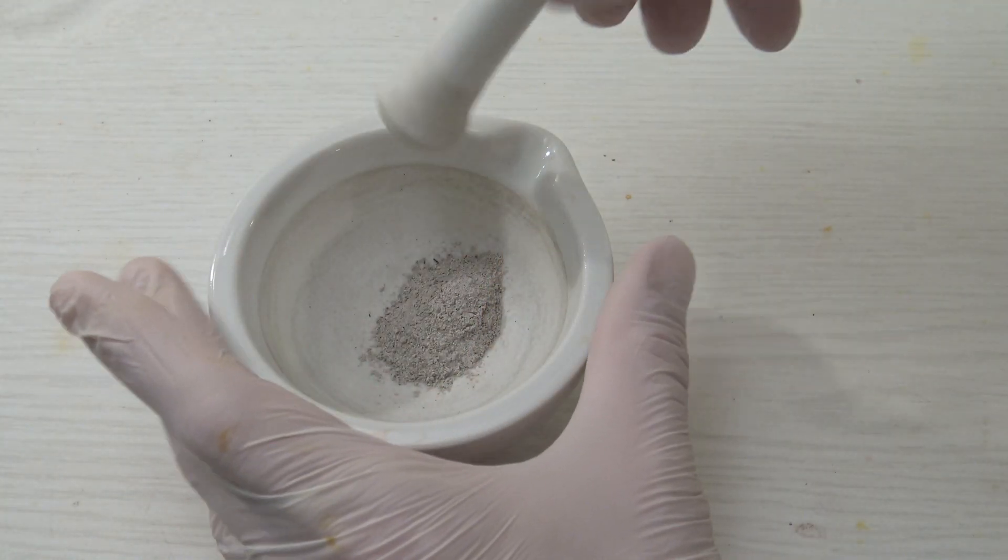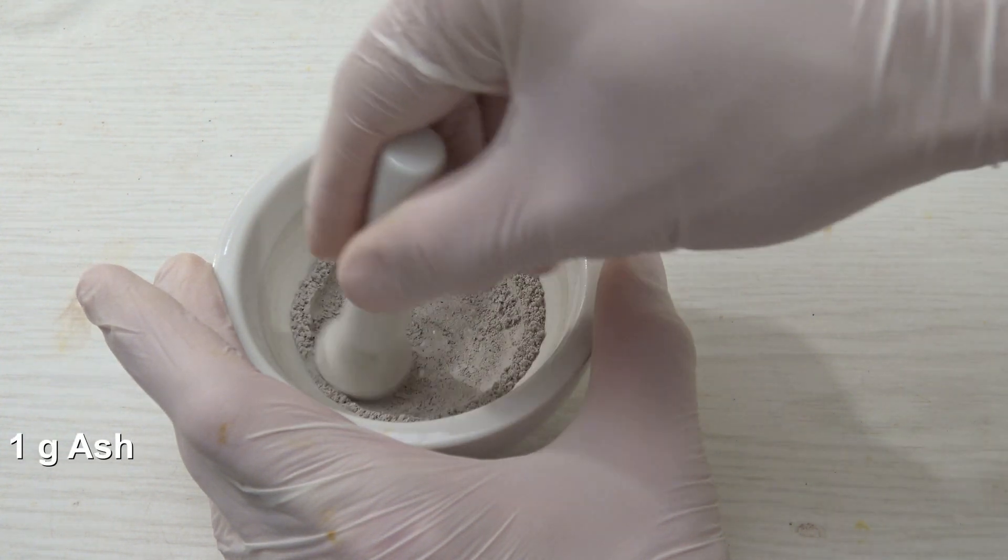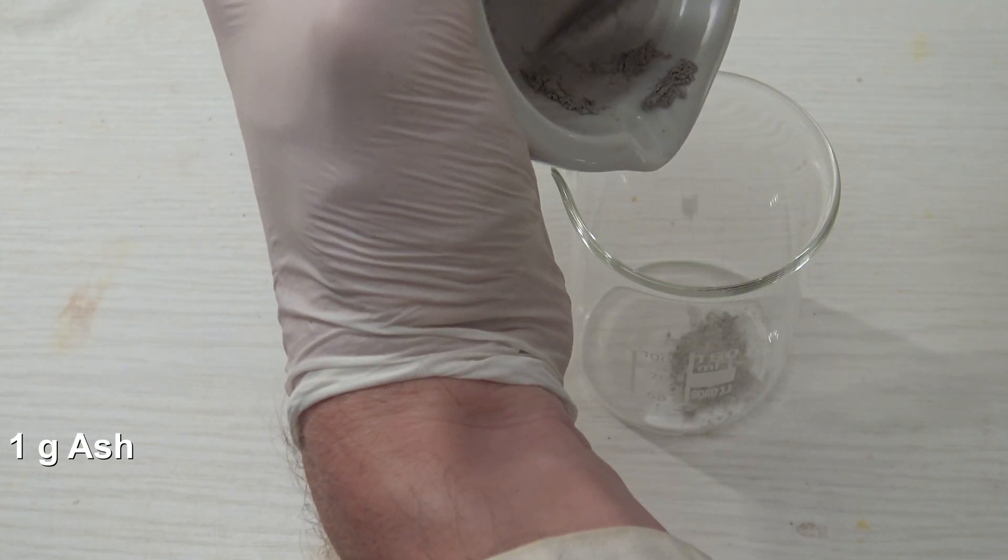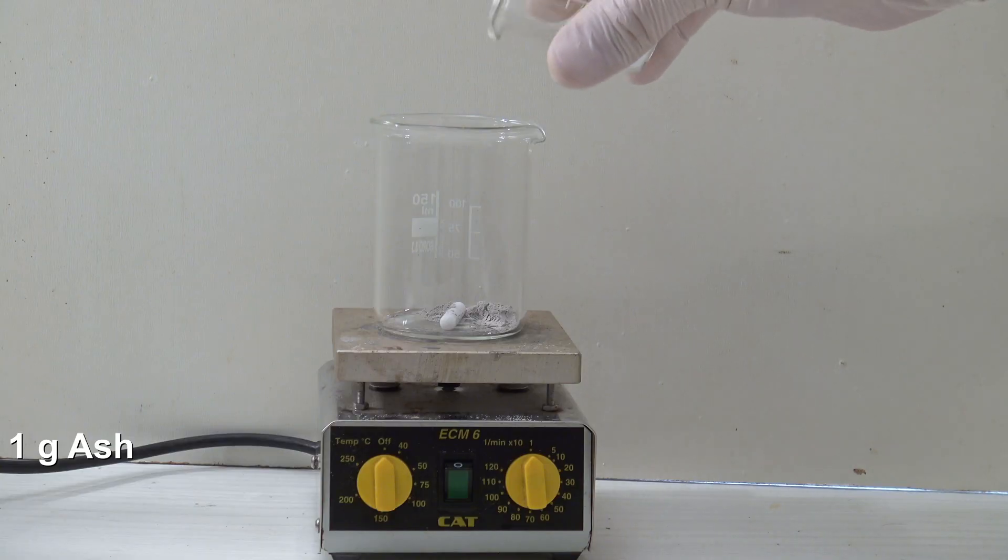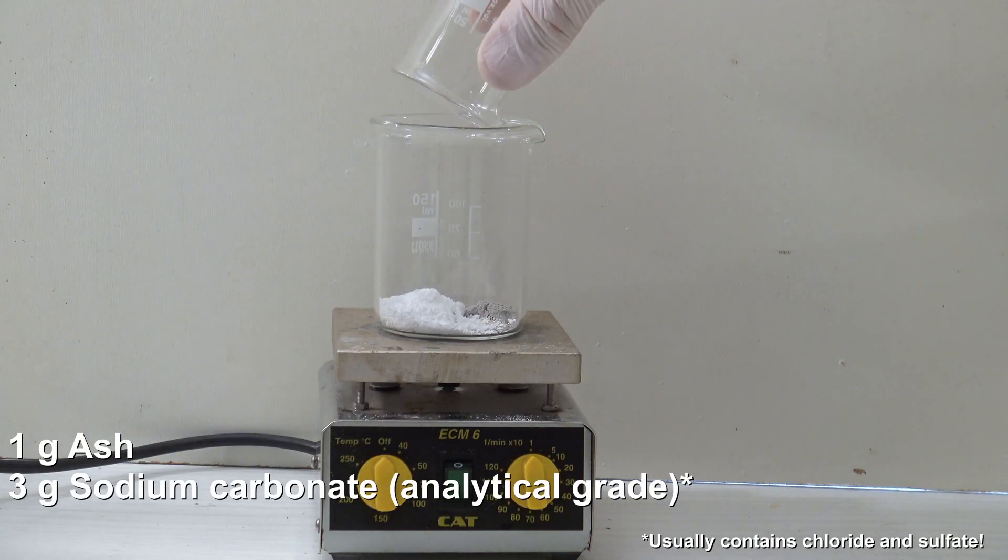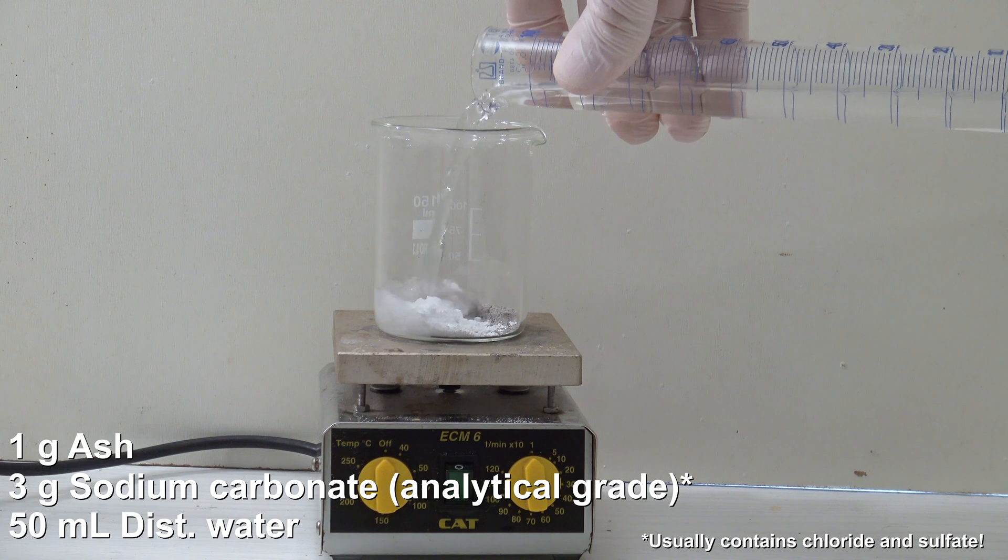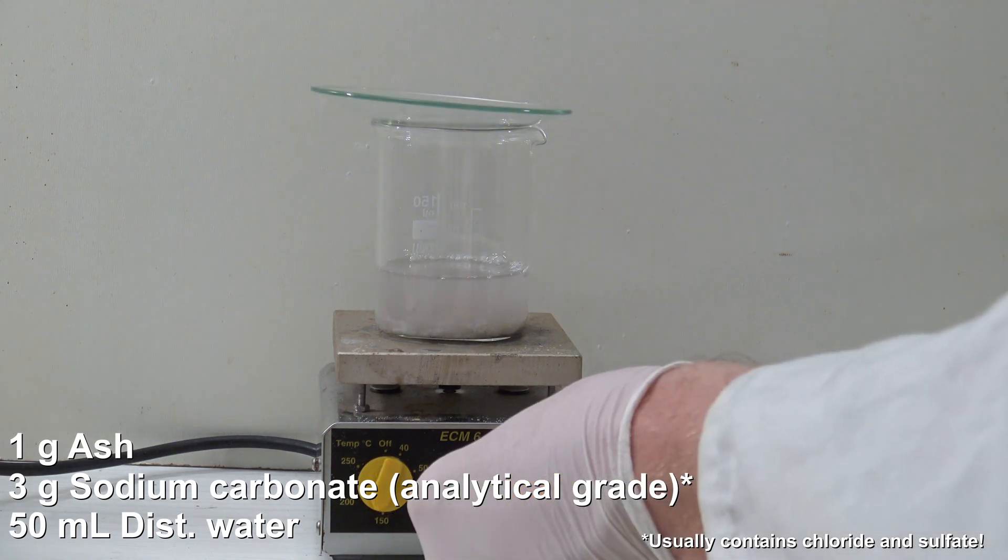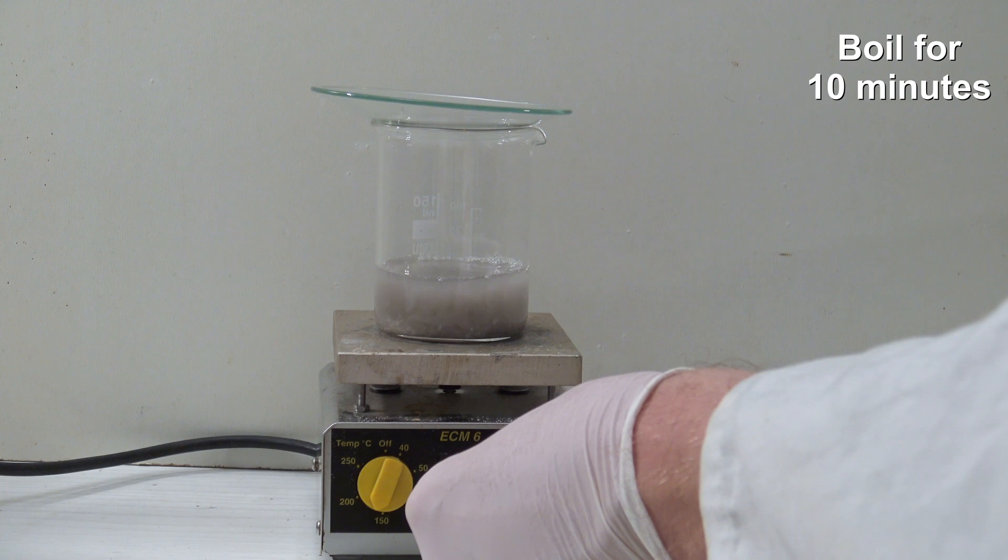To test for other ions, one gram of the ash was crushed into a fine powder and added to a beaker. To this, 3 grams of analytical grade sodium carbonate and 50 milliliters of distilled water were added. Then the mixture was stirred and heated to a boil for 10 minutes.